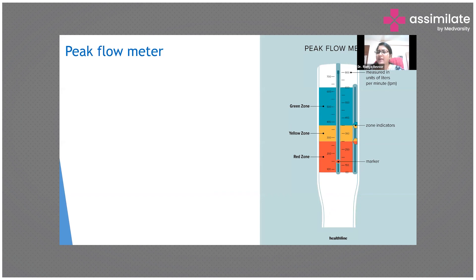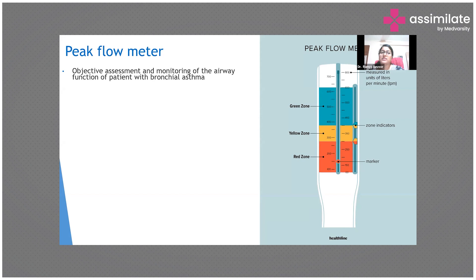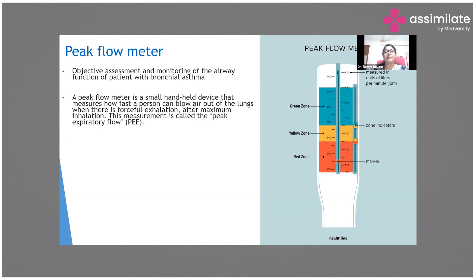The peak flow meter is a simple device that costs around 250 to 300 rupees in India — very affordable, and patients can have one at home. It's used for the objective assessment and monitoring of airway function in patients with bronchial asthma, so they can monitor their progress and treatment at home.